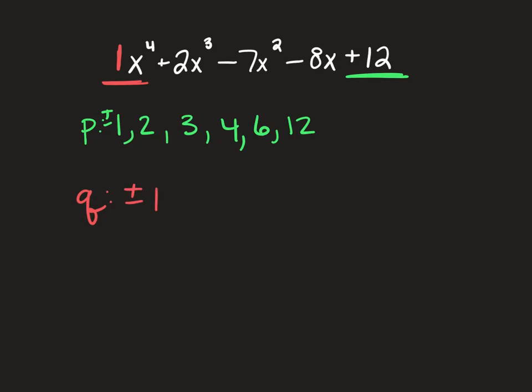So, then we technically are taking all of our P's, dividing them by all of our Q's. So, we're basically just taking everything in our green list and dividing it by 1, which would make our final answers plus or minus 1, 2, 3, 4, 6, and 12. So, this is fairly short when your leading coefficient is 1.